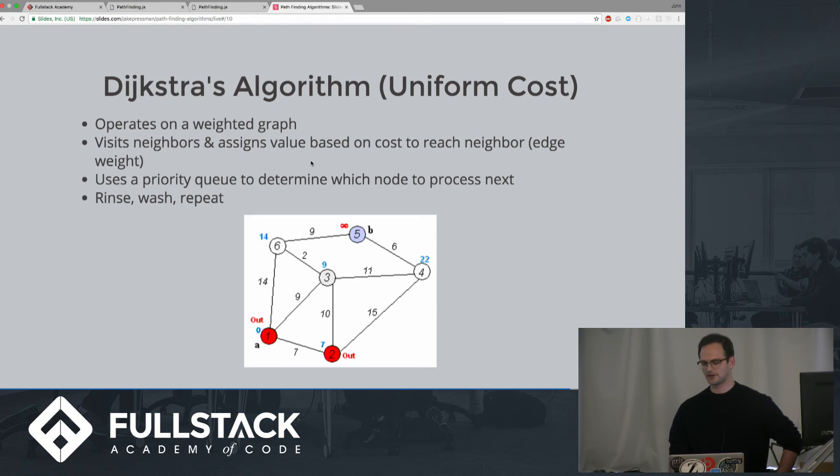Dijkstra's algorithm, like breadth-first search, will visit all neighbors from a given node. Initially, the value of each of these neighbor nodes will be unknown unless previously visited from another source. A value is then assigned to each neighbor that is equal to the cost to get to that node. You can see the edges have a number. And when we visit a node, we assign the number that the edge has to that node.